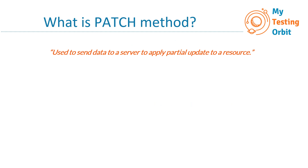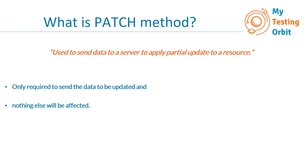A PATCH method is used to send data to a server to apply a partial update to a resource. Whenever we need to make changes partially to a resource, we use the PATCH method. Only the data to be updated needs to be sent — for example, if we just need to change one attribute like the email address of a user in a database, we only send that attribute and nothing else will be affected.